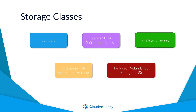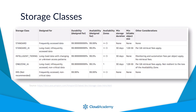It's best to review the differences between these classes from within a table to understand the key points of difference. The main differences between the classes are the durability and availability percentages each class offers. We can split them into two categories: data that is accessed frequently, and data that is accessed infrequently.